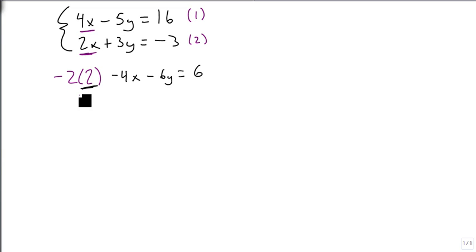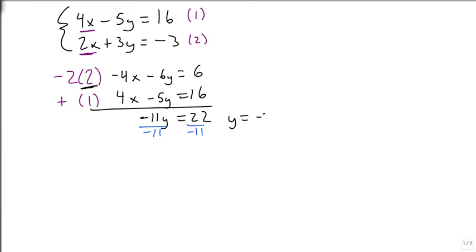Then I'm just going to take equation 1 as it's written, and I'm going to add them together. When I add these together, the minus 4x and the 4x go to 0 and disappear. And then minus 6y and the minus 5y becomes a minus 11y. 6 and 16 is 22. And now I've got a very easy equation to solve for y and get that y is negative 2.